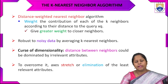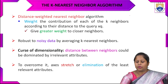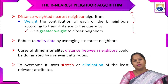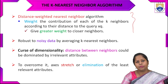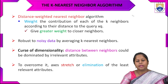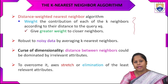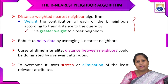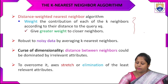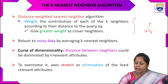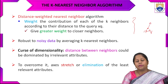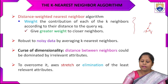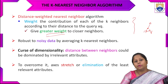Distance-weighted K-nearest neighbor weights the contribution of each of the K neighbors according to their distance from the query point x_q. A greater weight corresponds to a closer neighbor. For example, if weight w1 equals 0.5 and weight w2 equals 0.4, we consider the greatest weight for the closest neighbor.